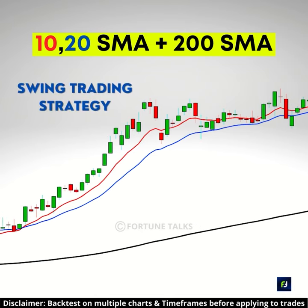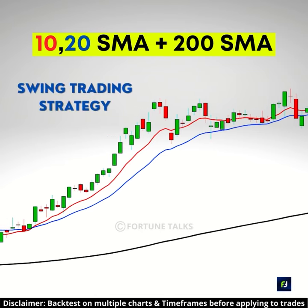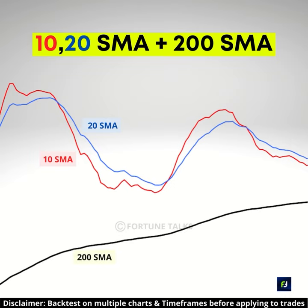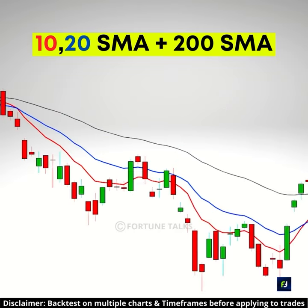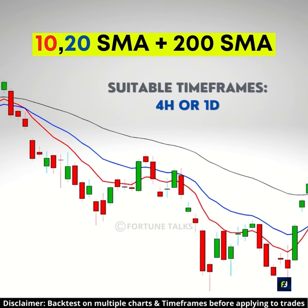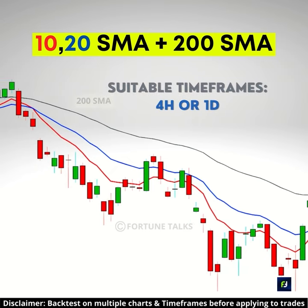This is a swing trading strategy using 3 moving averages. We will use 10 and 20 period simple moving averages, along with the 200 period SMA. Being a swing strategy, the best time frames are 4 hours or 1 day.